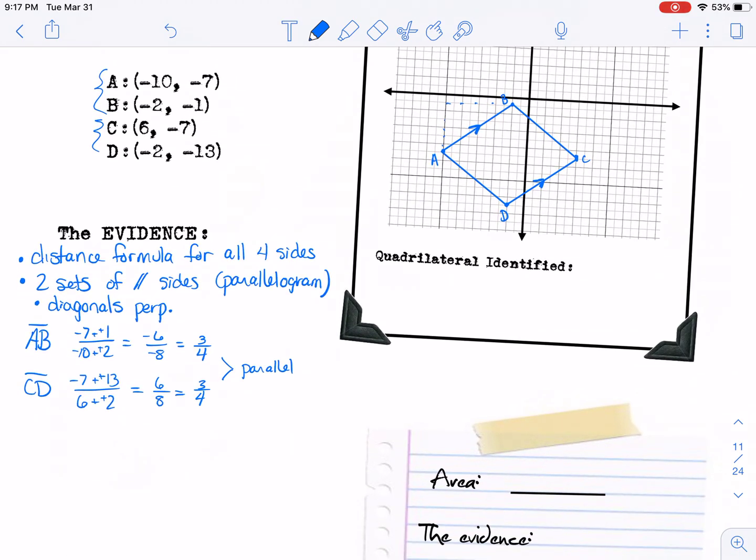And then I need to do that same thing for the other two sets. So I'm going to do BC first. So that's going to be negative 1 minus negative 7, and then negative 2 minus 6. So that would give us a 6 on the top and a negative 8 on the bottom. So that's a negative 3 fourths.